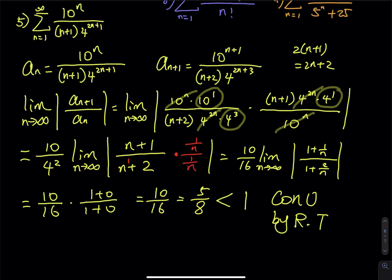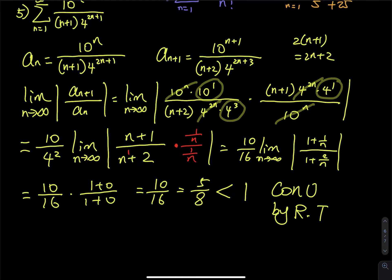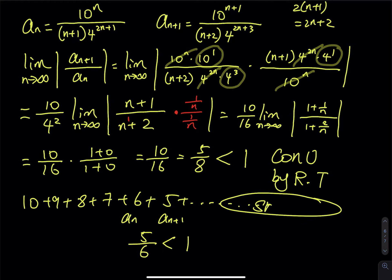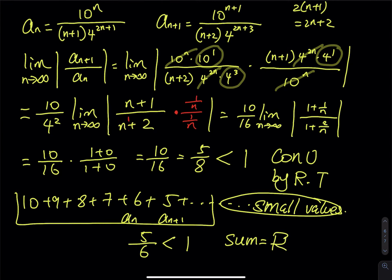By the ratio test, the next term is less than the current term, so the series is in descending order. For example: 10, 9, 8, 7, 6, 5 — a_{n+1} divided by a_n is less than 1. As you look all the way to the right, the terms are very small, very close to zero. As a result the sum is determined by the first couple of values, so the sum equals a real number — that is convergence.